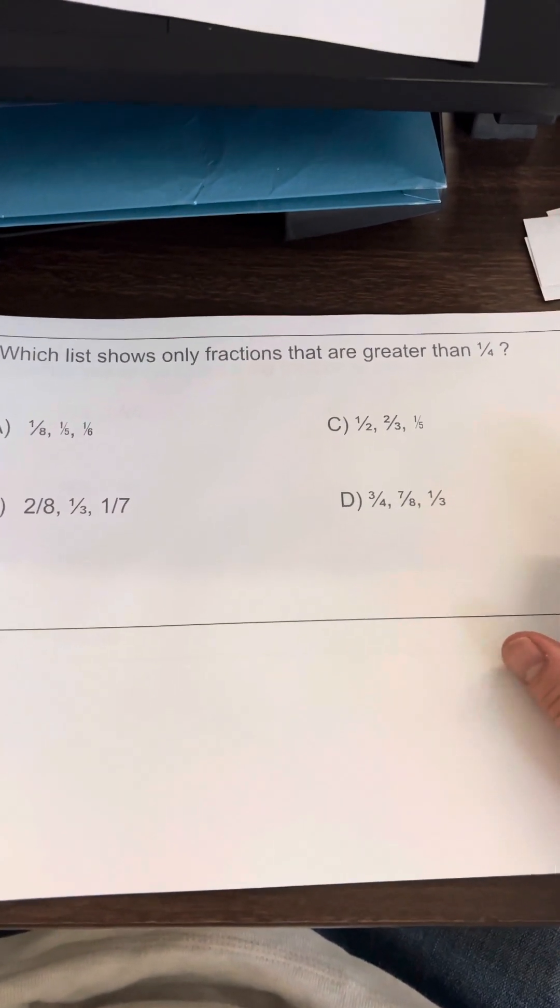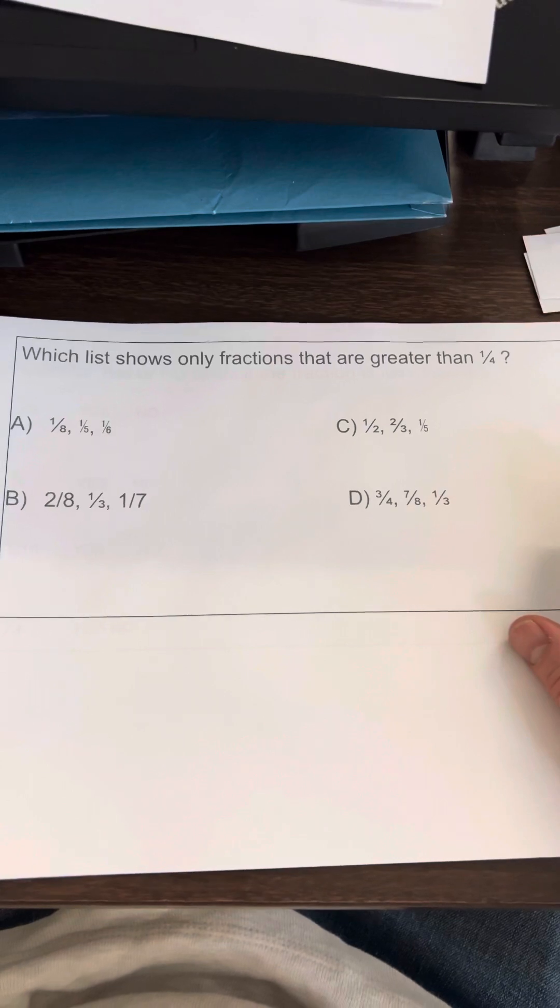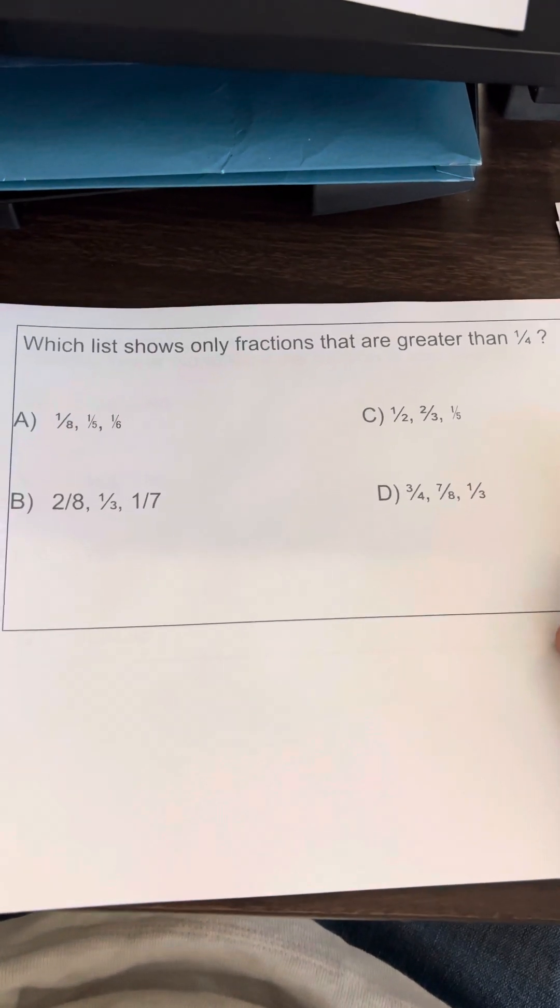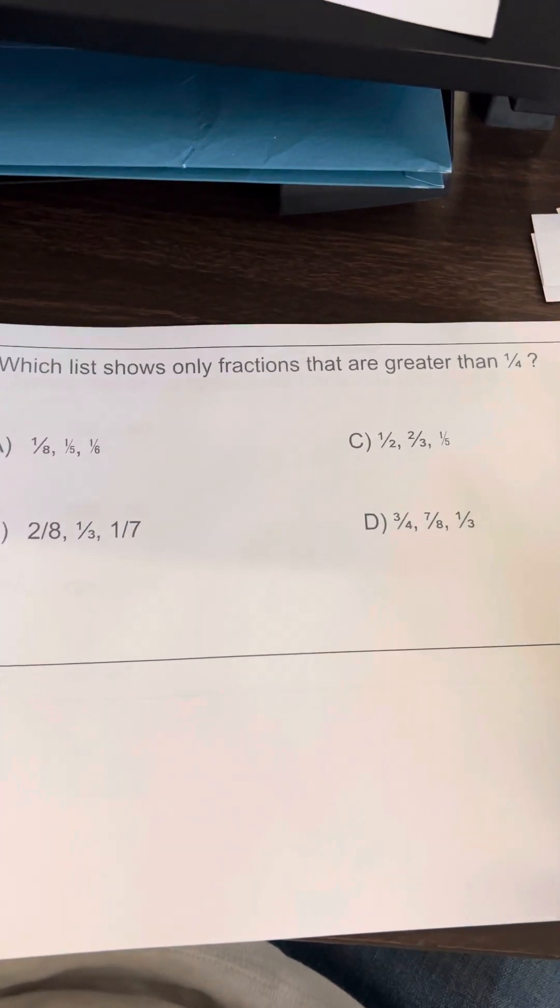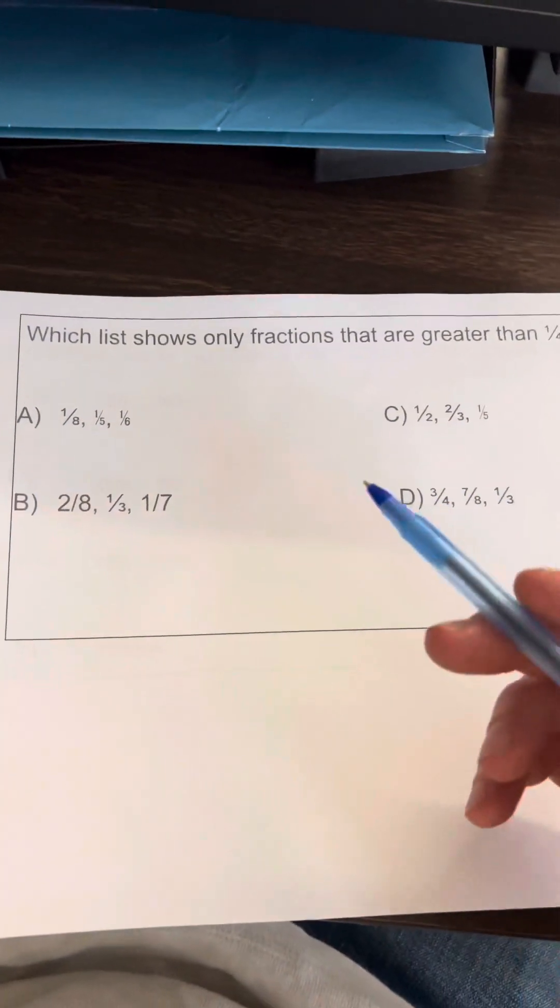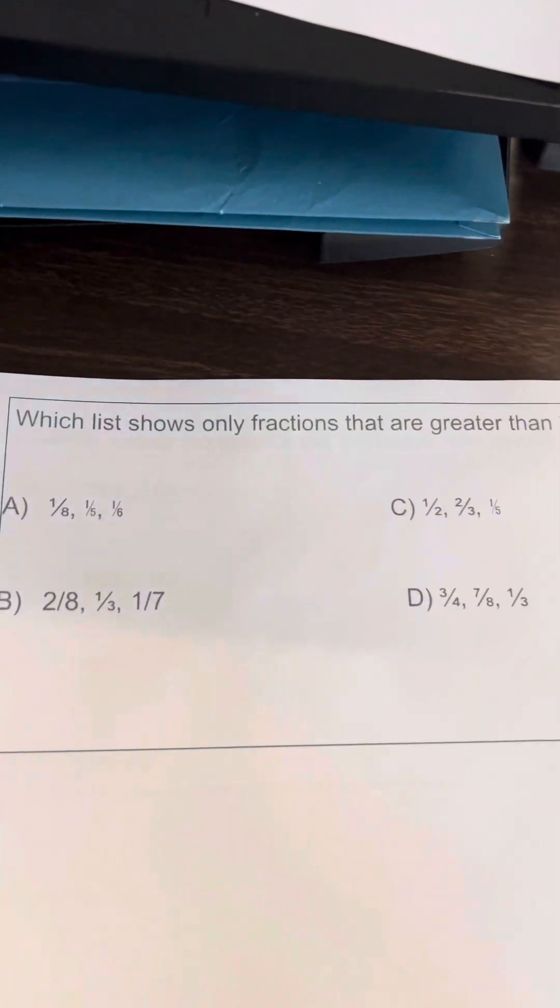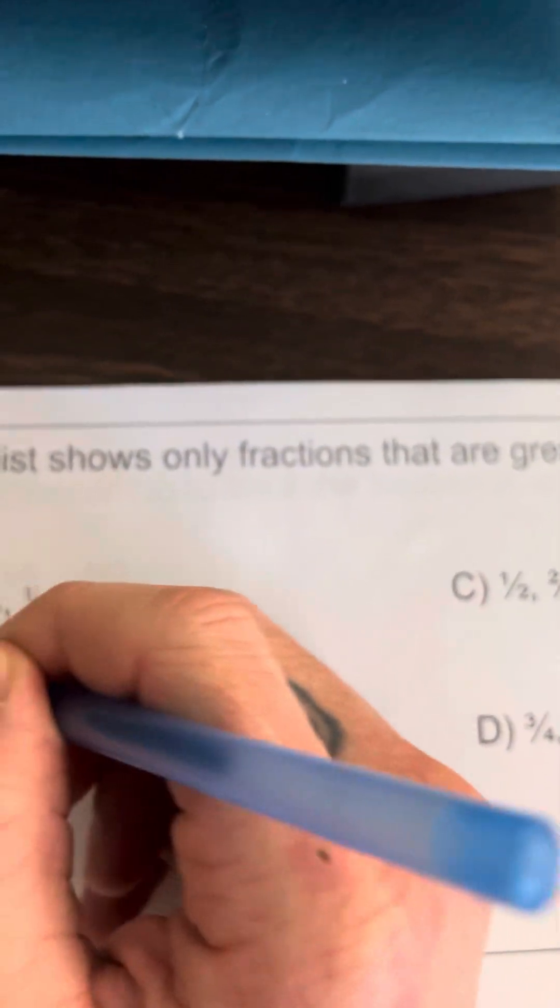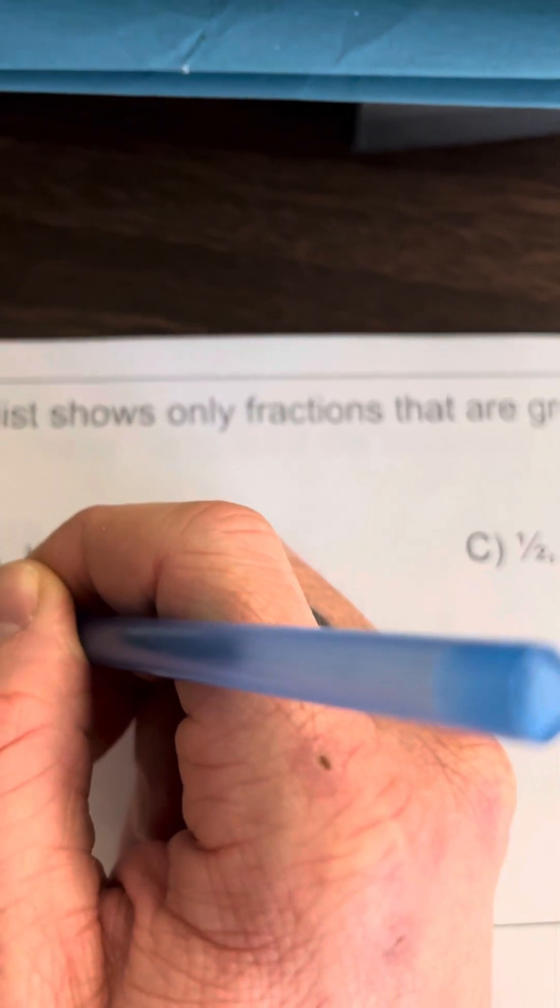Which list shows only fractions that are greater than one-fourth? So I need to find a list with fractions that are all bigger than one-fourth. The easiest way to do this is to just compare all of these to one-fourth—find the list where everything is bigger than one-fourth.